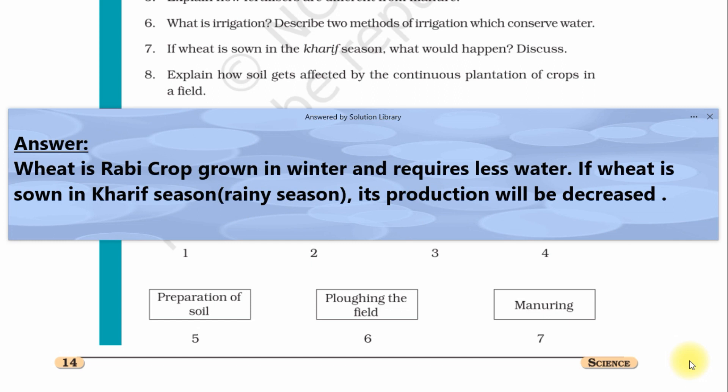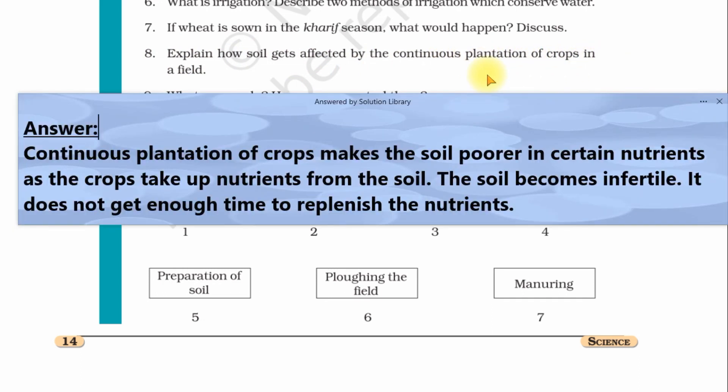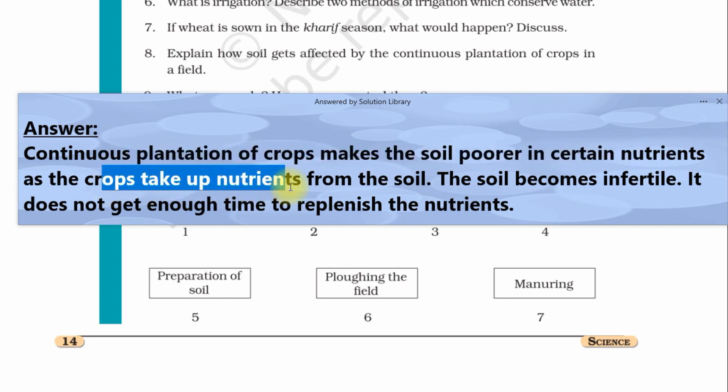Question number eight: Explain how soil gets affected by the continuous plantation of crops in a field. Answer: Continuous plantation of crops makes soil poorer in certain nutrients as the crops take up nutrients from the soil. The soil becomes infertile. It does not get enough time to replenish the nutrients.